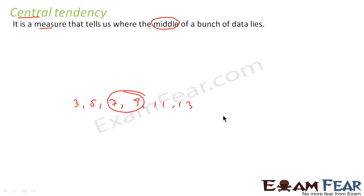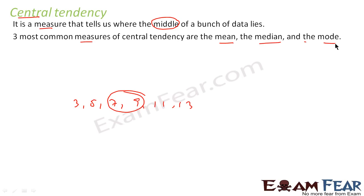It tells where the middle of the bunch of data lies. There are three measures for central tendency: mean, median, and mode. We have covered all this in previous classes. Mean is when you add all the numbers and divide by the count. For median, you arrange in ascending order and get the center one. Mode is something which has the highest frequency. I'll cover all these things and give you a brief introduction of mean, median, and mode.